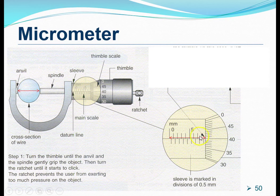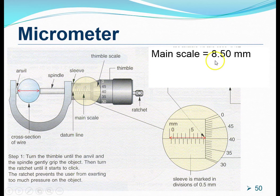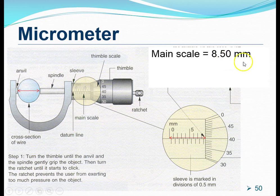Now, this 8.5 millimeters that we read from the sleeve is known as the main scale reading. So, we write it down in this way: 8.5 millimeters. Remember that micrometer measures to two decimal places. Therefore, we actually put down 8.50 rather than just 8.5 millimeters.